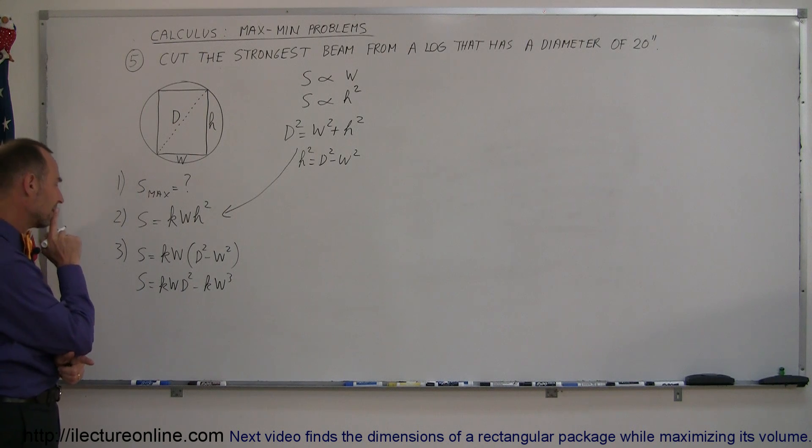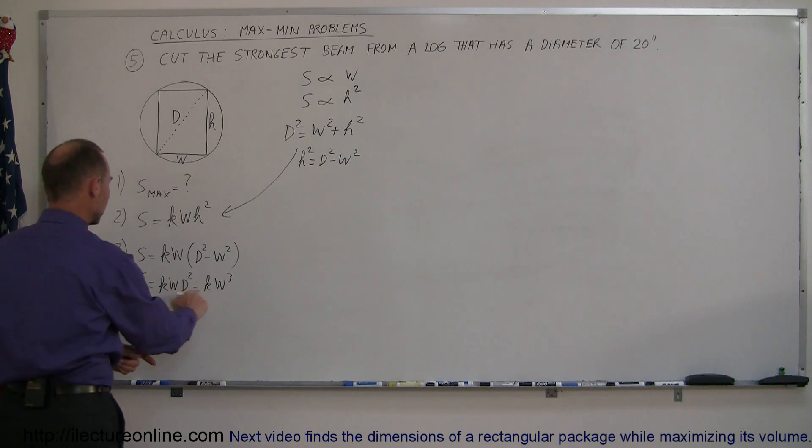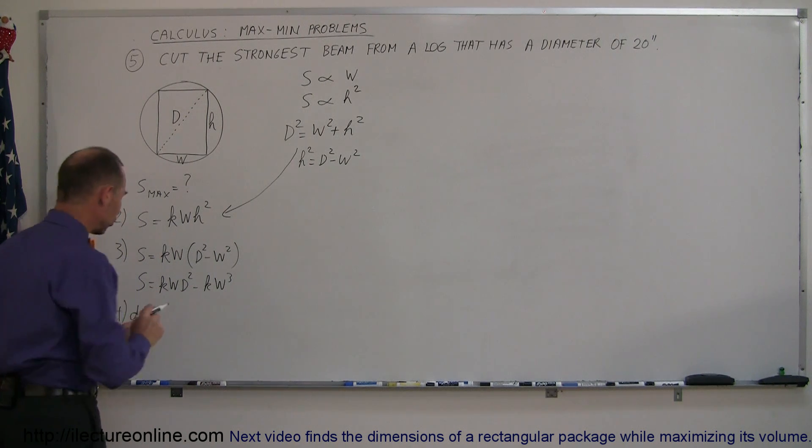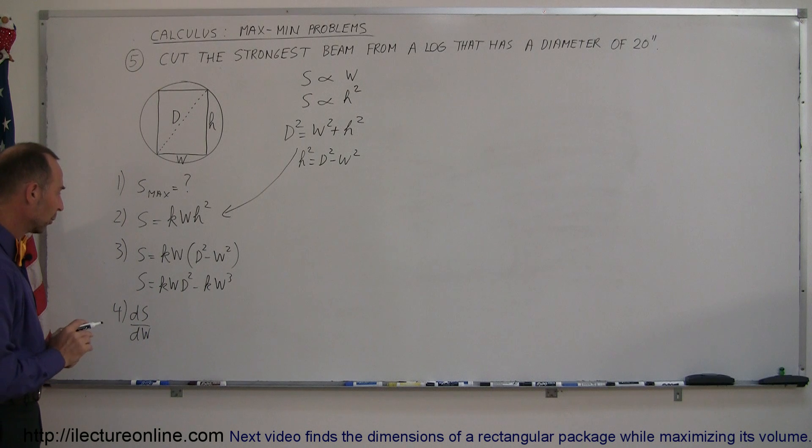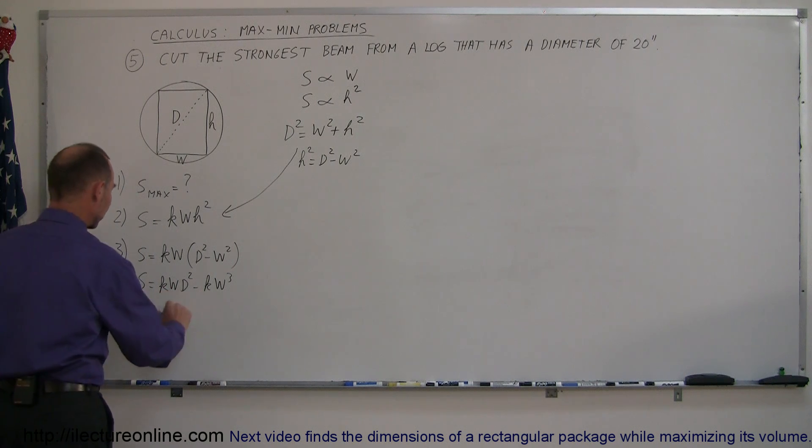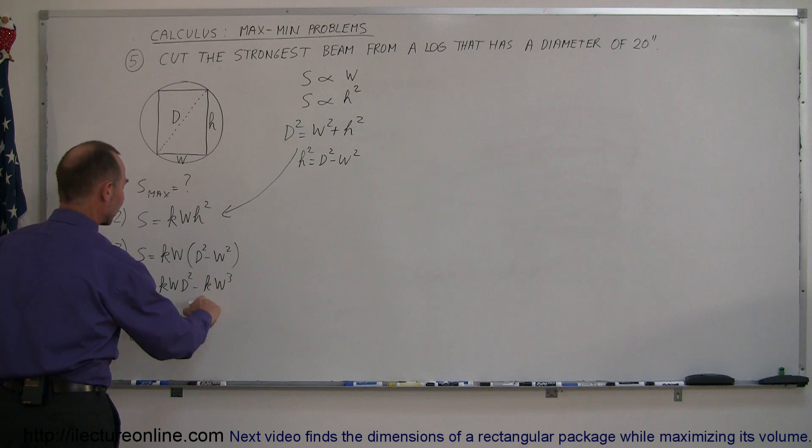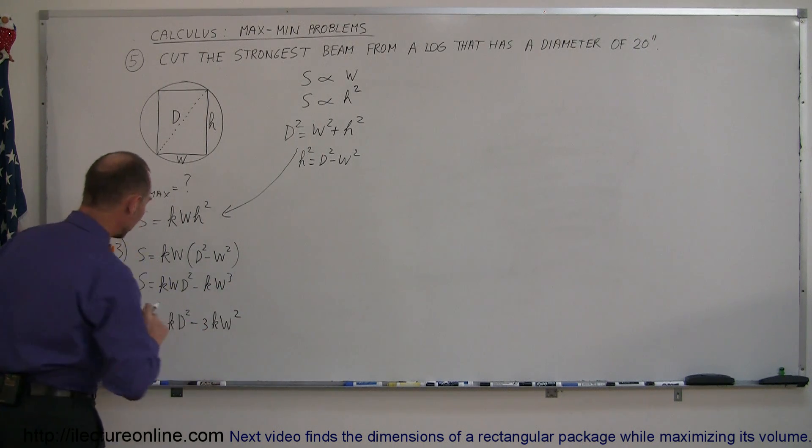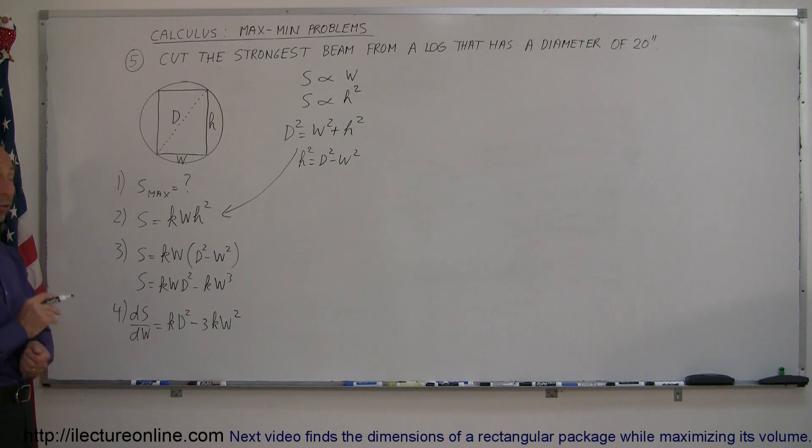Now we can see here that there's only one variable, w. So what we're going to do here is we're going to take the derivative dS/dw. So just to make sure we understand what variable we're taking derivative with respect to, we write it like this, and this is equal to—since w is the variable—it would be k times d² minus 3 times kw². And there's the derivative of that strength equation.